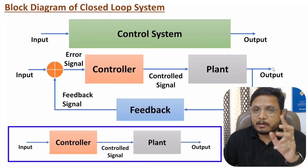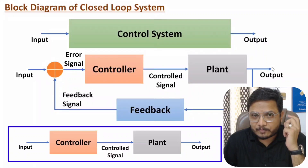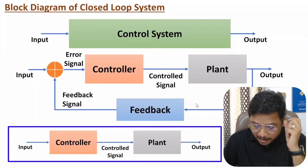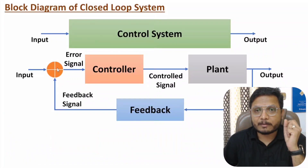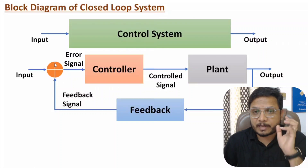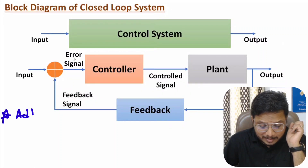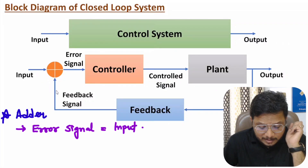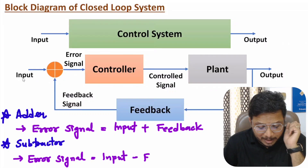With closed loop control system, we have two additional elements. First is the feedback that we take from the output. Second is the adder-subtractor element. If this element is an adder, then the error signal is input plus feedback signal. And if this element is a subtractor, then the error signal is input minus feedback signal.